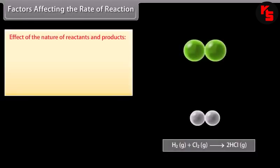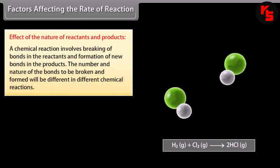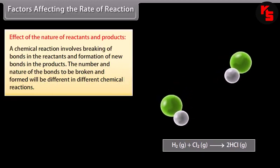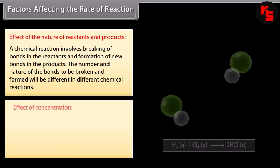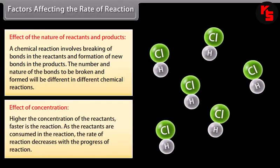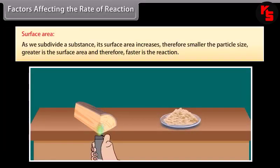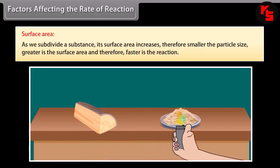Factors affecting the rate of a reaction: a chemical reaction involves breaking of bonds in the reactants and formation of new bonds in the products; the number and nature of bonds differ in different reactions. Higher the concentration of the reactants, faster is the reaction; as reactants are consumed, the rate decreases. As a substance is subdivided, its surface area increases; smaller the particle size, greater the surface area, and therefore faster the reaction.